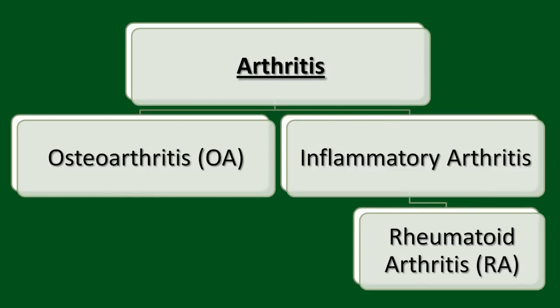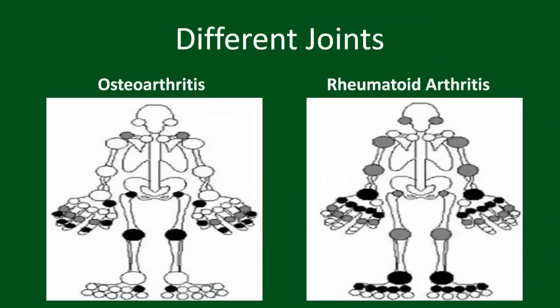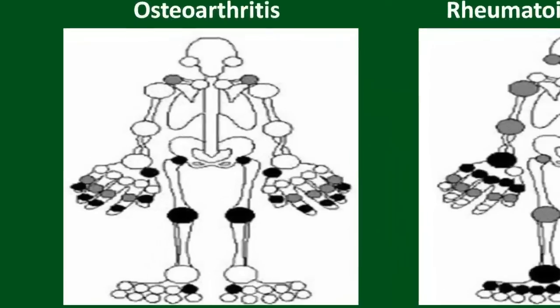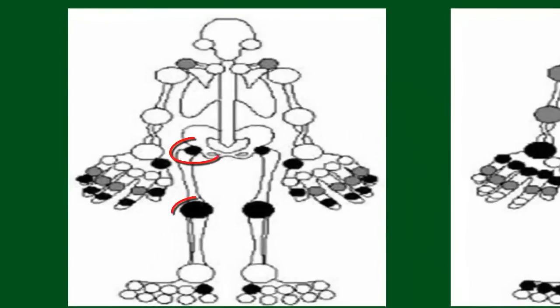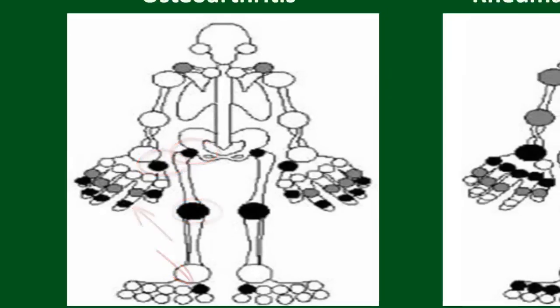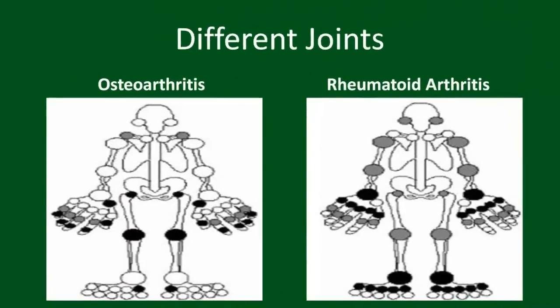There are some very basic and clear differences between these two forms of arthritis. They affect different joints. As you can see by the joints marked in black, osteoarthritis most commonly affects the hips and knees, the big toes and base of the thumbs, and the most distal part of the fingers, causing pain and sometimes bony enlargement. It is unusual for osteoarthritis to affect other joints.